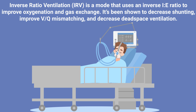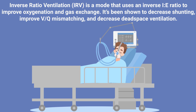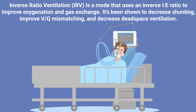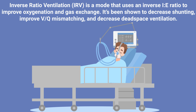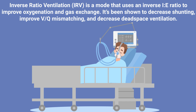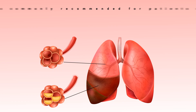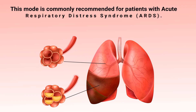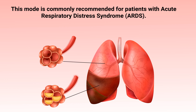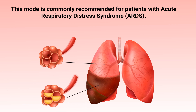Inverse ratio ventilation is a mode that uses an inverse I:E ratio to improve oxygenation and gas exchange. It's been shown to decrease shunting, improve V/Q mismatching, and decrease dead space ventilation.